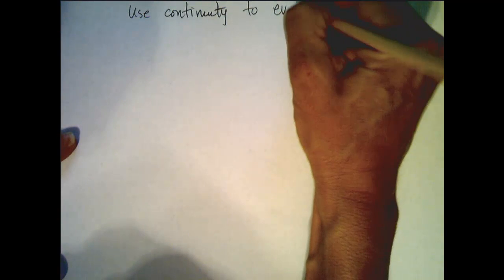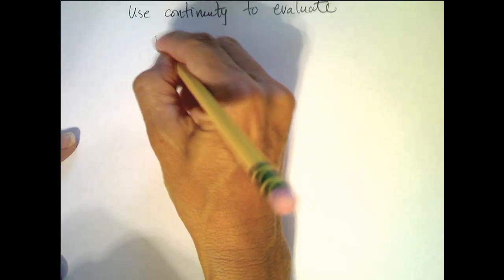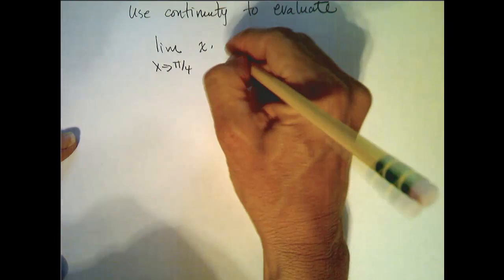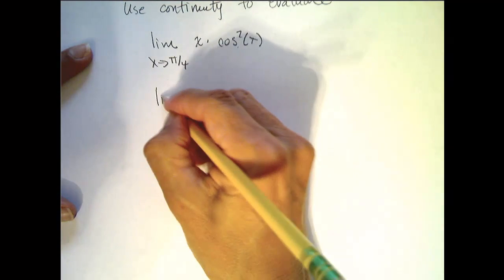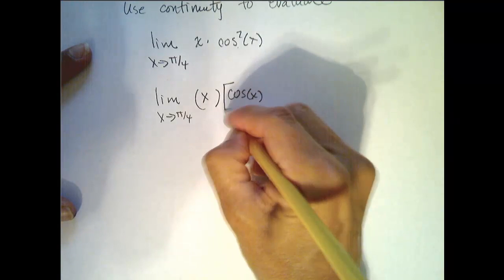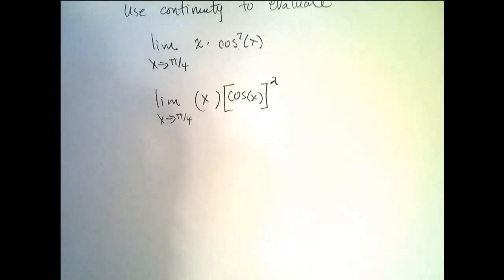Let's look at an example. I want to use continuity to evaluate this limit: the limit as x approaches pi over 4 of x times the cosine squared of x. I'm going to rewrite this — x approaches pi over 4, with x in parentheses times cosine of x, that quantity squared. Those mean the same thing.